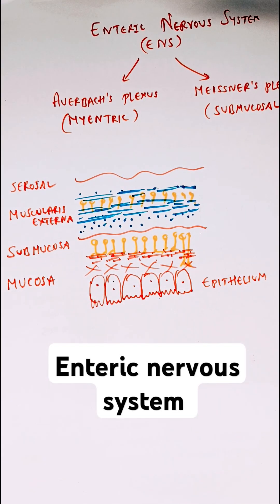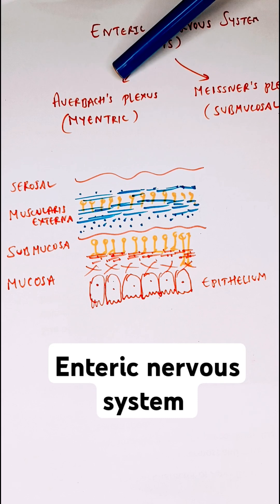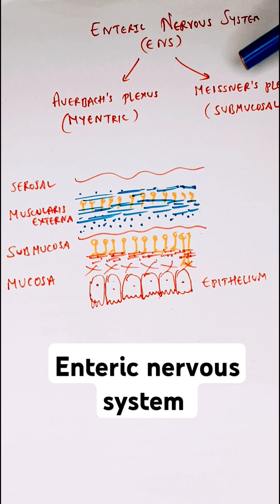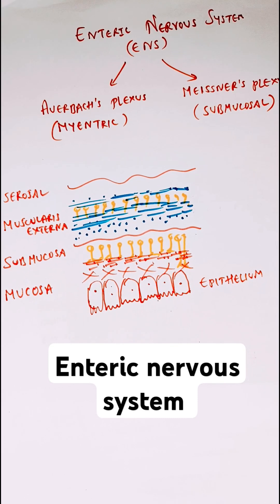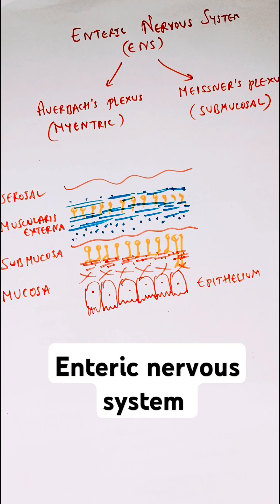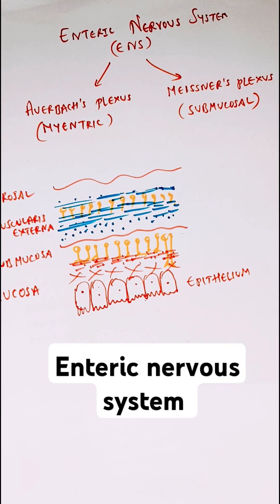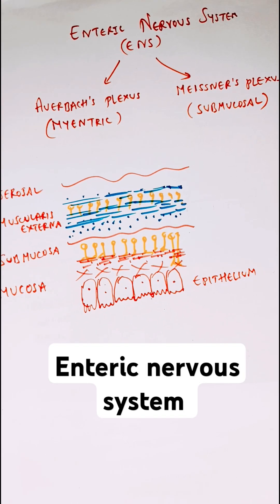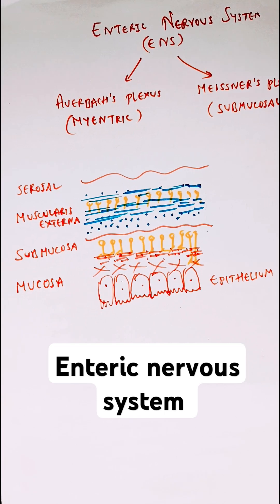In this video we will learn about the enteric nervous system. The enteric nervous system is grouped into Auerbach's plexus and Meissner's plexus. Auerbach's plexus is also called myenteric plexus, and Meissner's plexus is also called submucosal plexus.